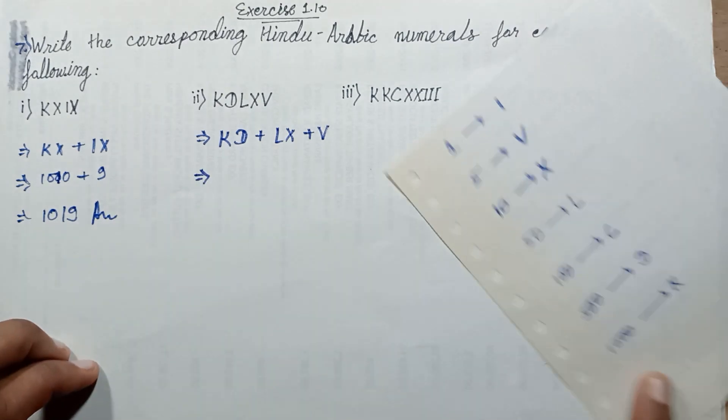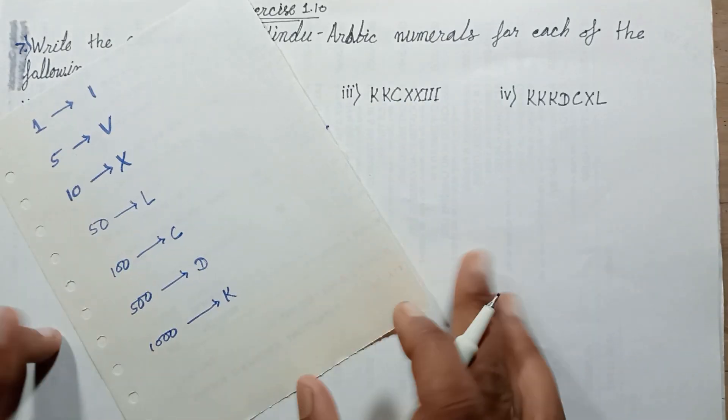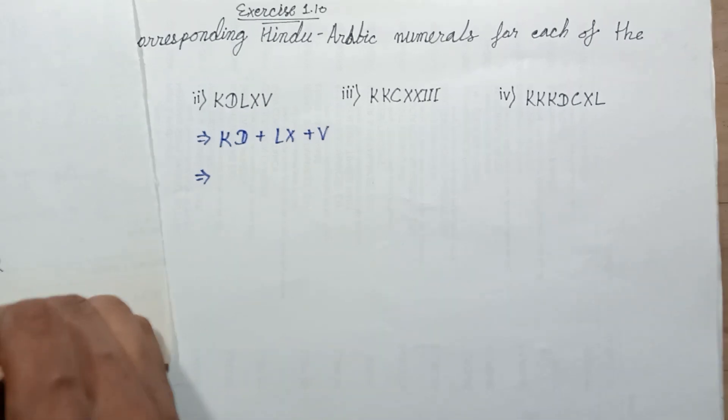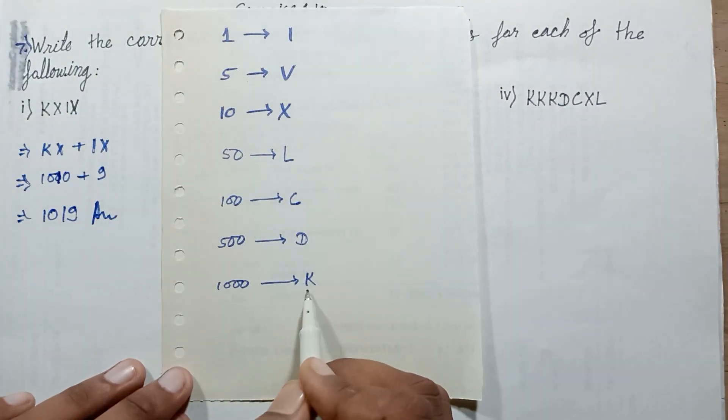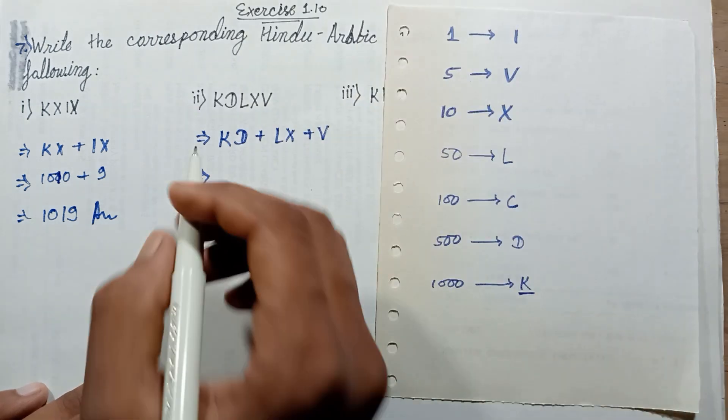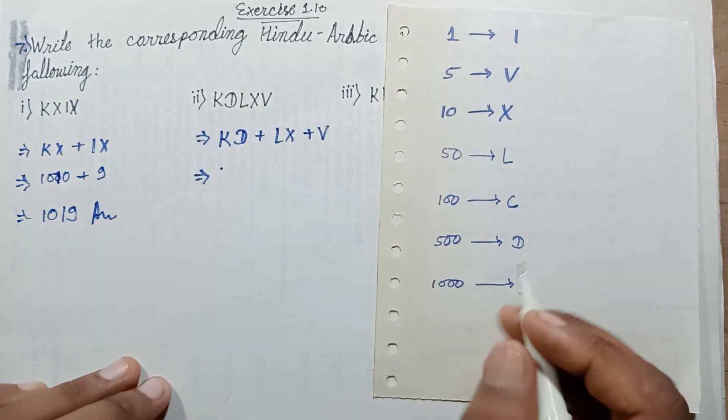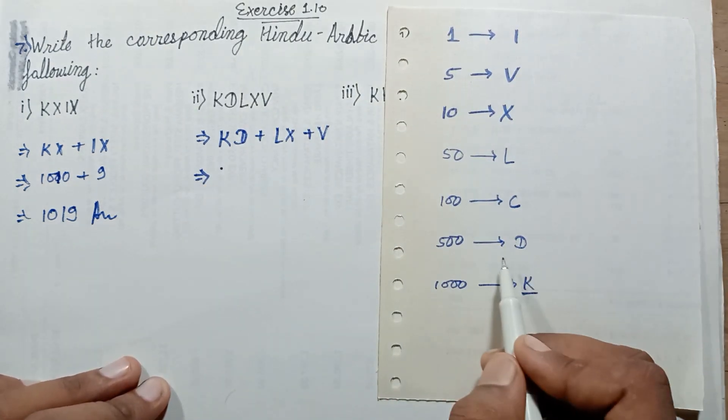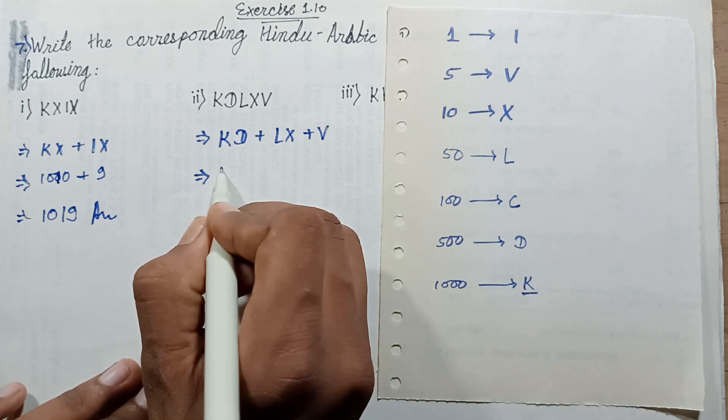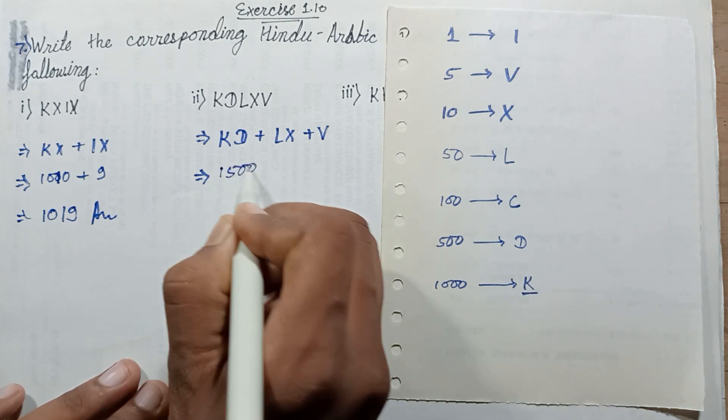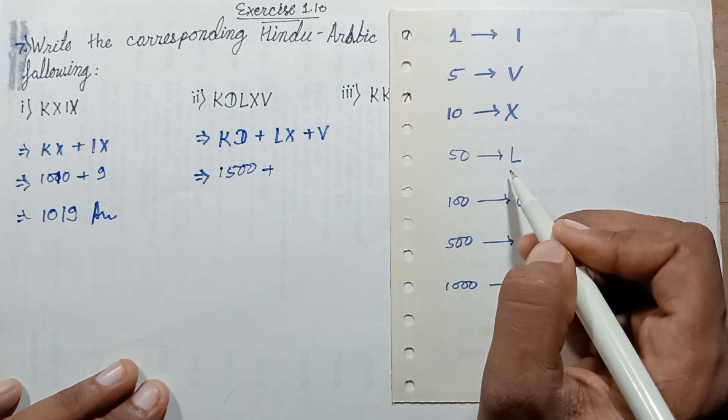KD plus LX plus V. K represents one thousand. KD represents one thousand five hundred. Plus L represents fifty, and X represents ten, equals sixty.